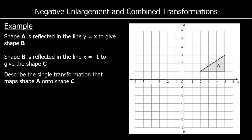Here is a different question: shape A is reflected in the line y equals x to give shape B. So let's draw that on. The line y equals x is this diagonal line going through (1,1), (2,2), (3,3), (4,4). We need to reflect our shape in that line. This point was half a box away, so the same distance on both sides; this point was 1 away so it would be 1 away on the other side; and this point was 2 away, so 2 away on the other side. So this is shape B.